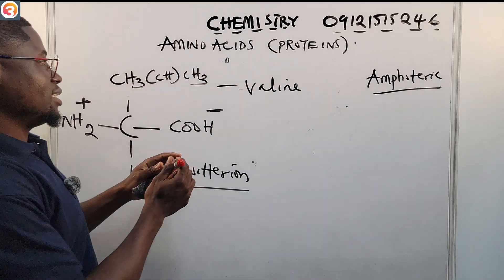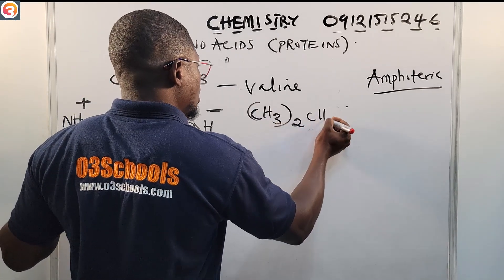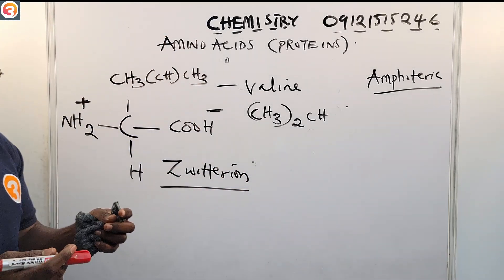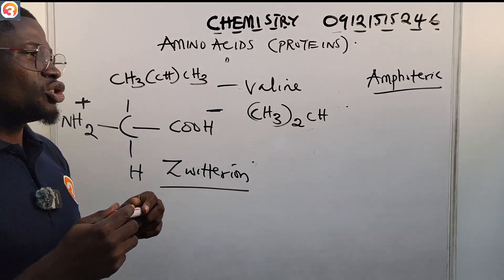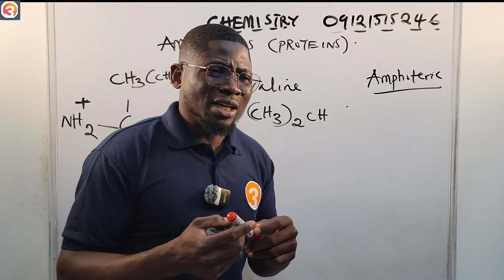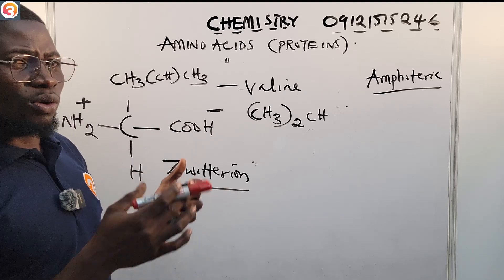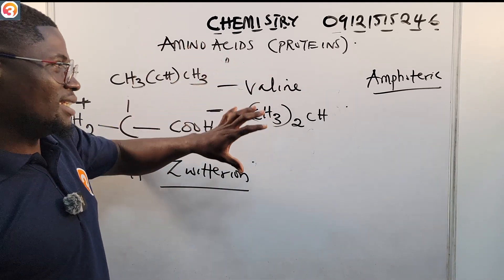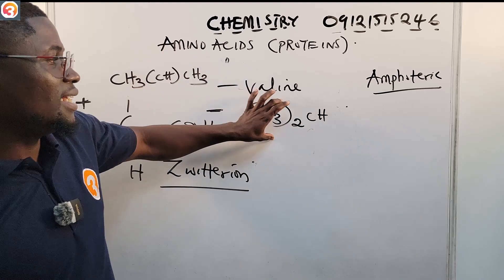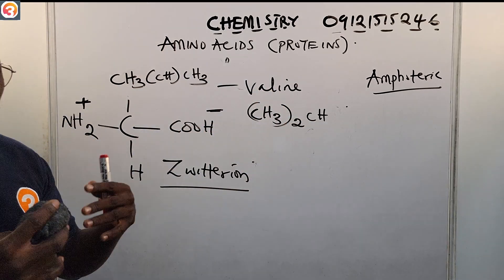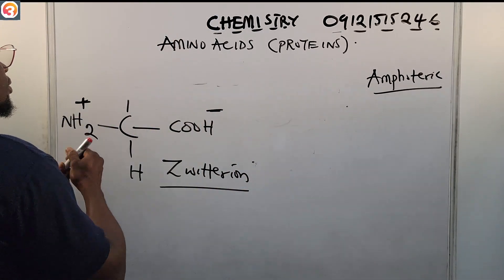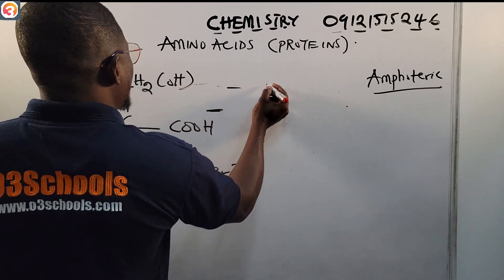Valine is an essential amino acid — it is for making energy and is not produced by the body. Instead you get it from protein sources like meat, fish, and dairy products. So valine's R group in one word is CH3CHCH3.